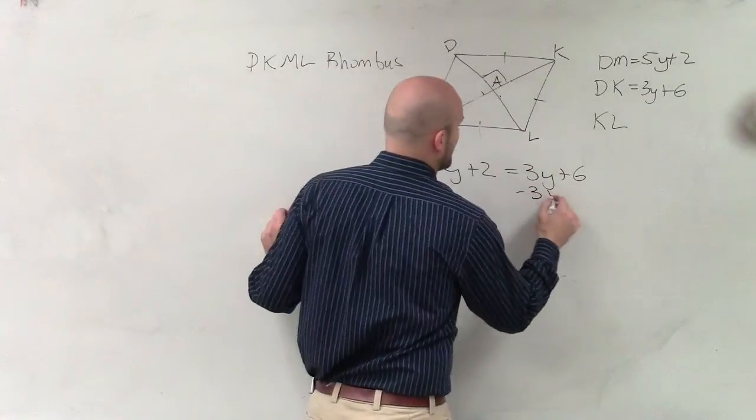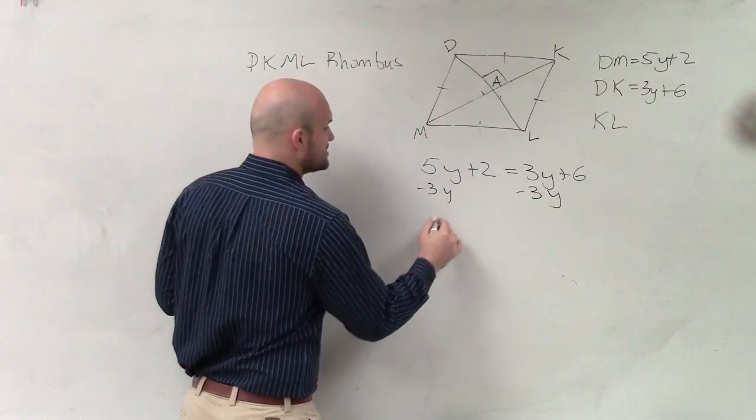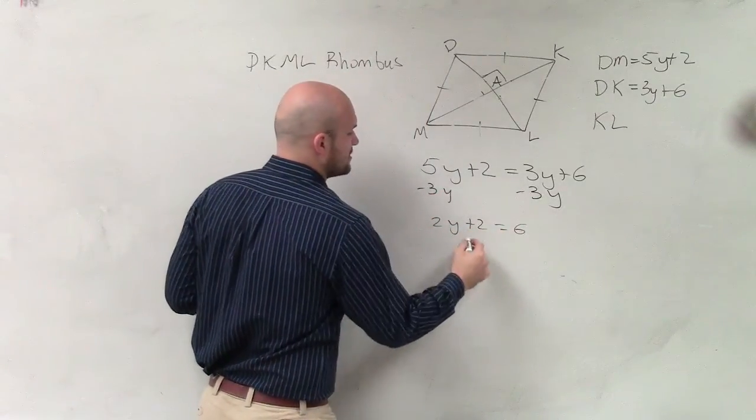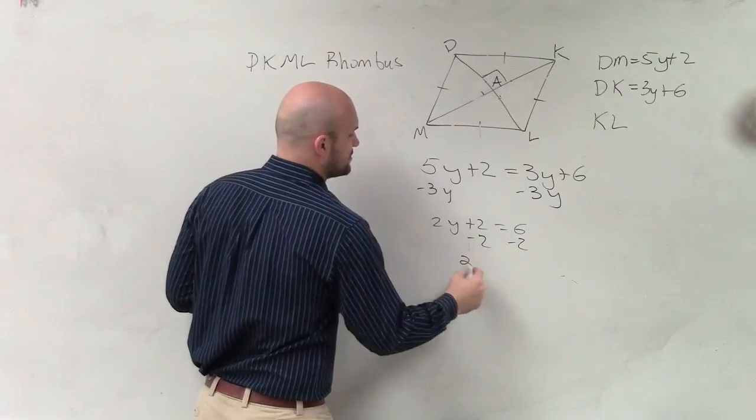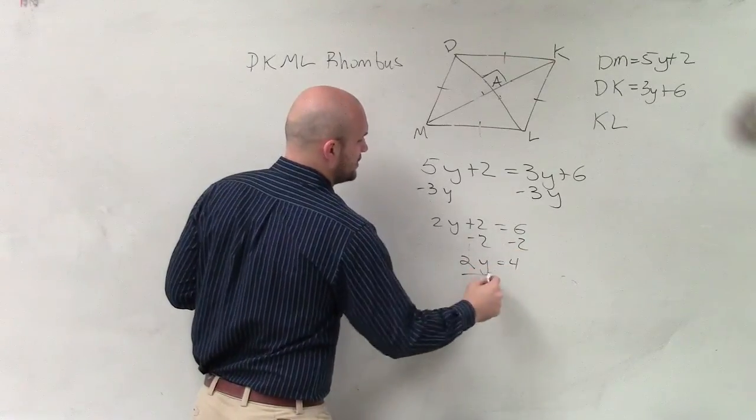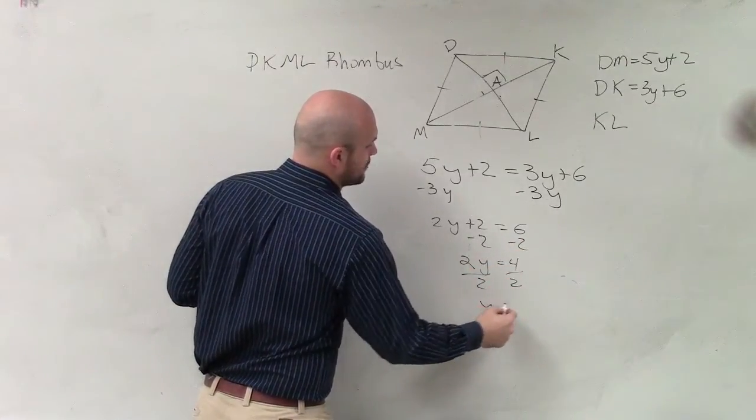So therefore, I'll solve for y. So I'll subtract 3y on both sides. 2y plus 2 equals 6. Subtract 2, subtract 2. 2y equals 4. Divide by 2, divide by 2. y equals 2.